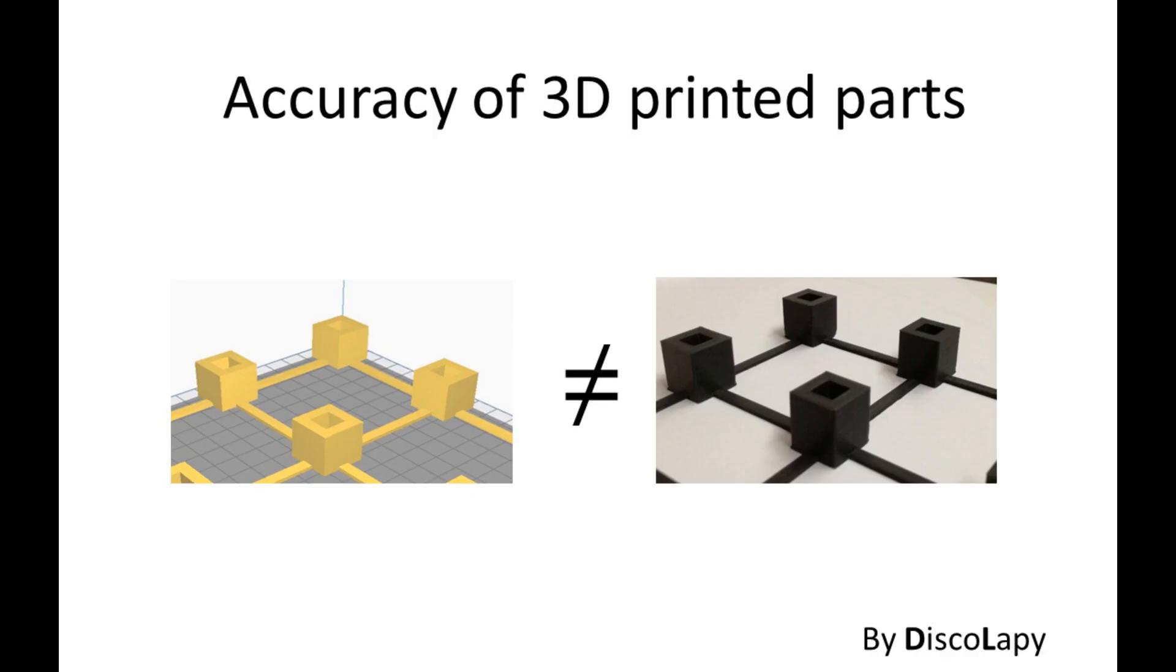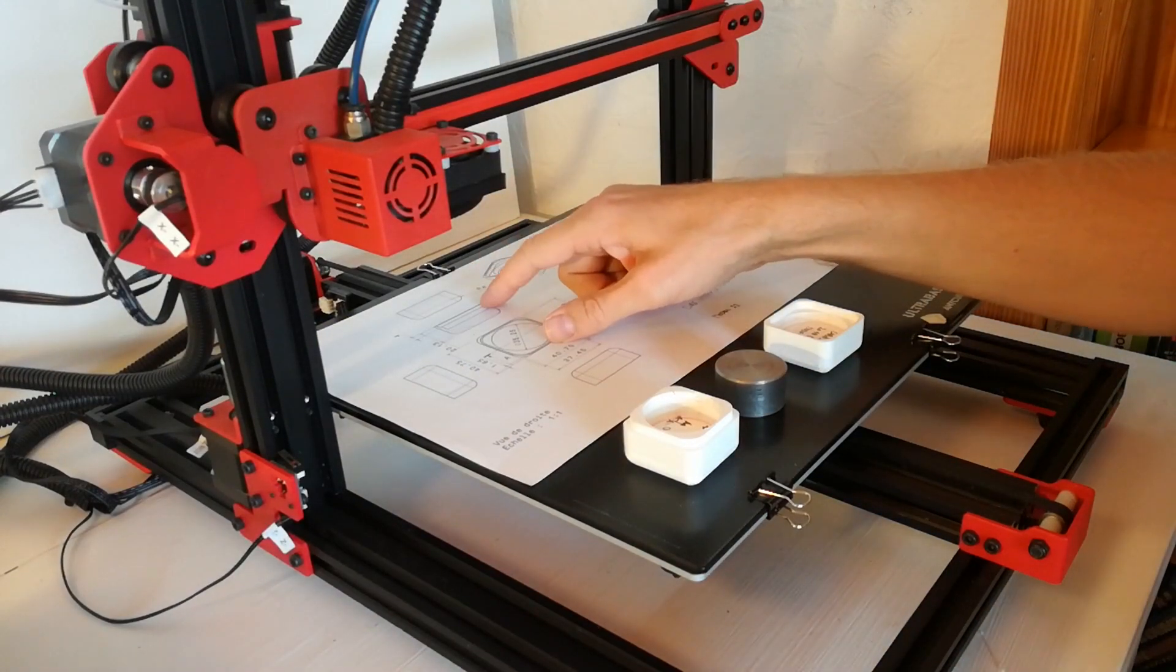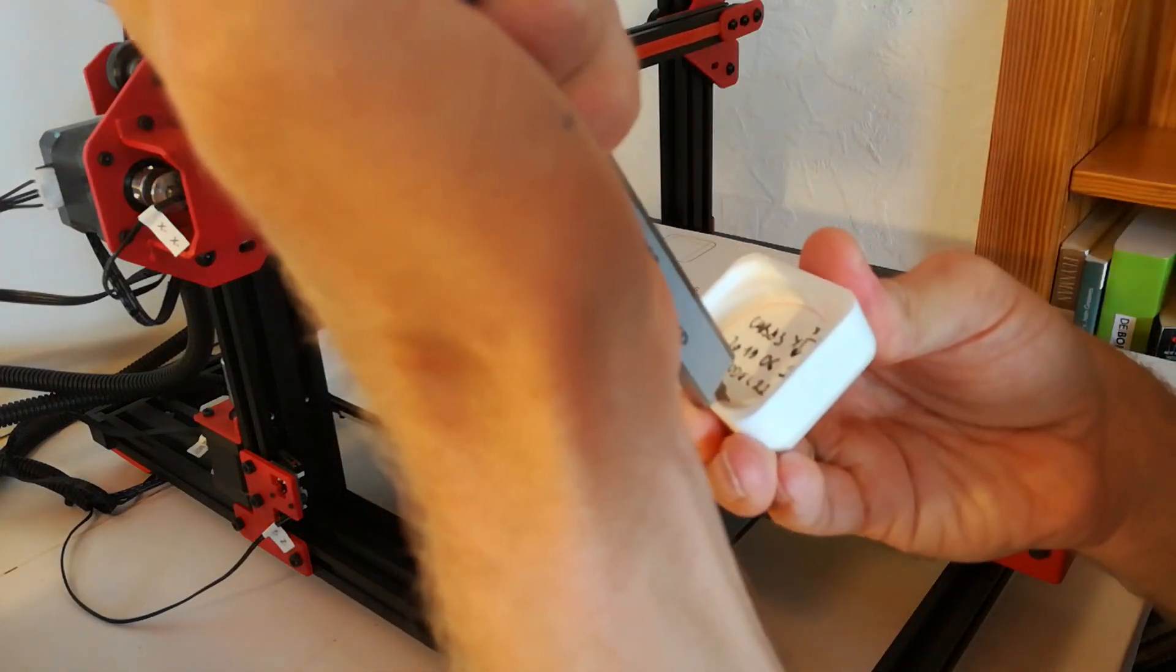Hi everyone, in this video I will speak about accuracy of 3D printed parts. So let's say if I have 9.6 millimeters in my drawing, I would like to produce my part as close to this dimension as possible.